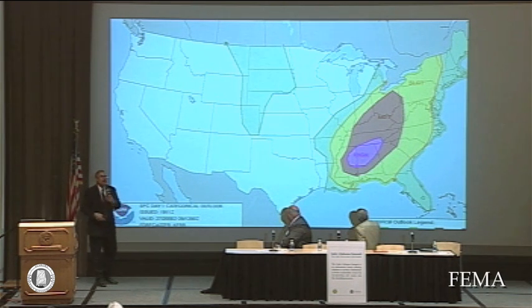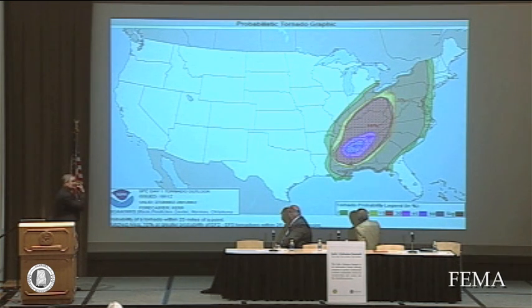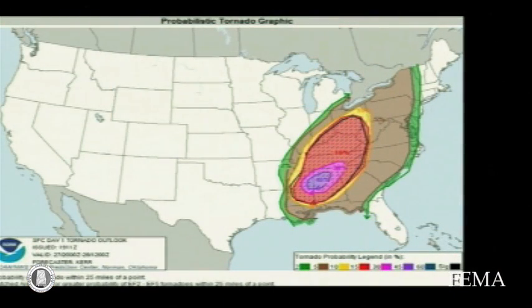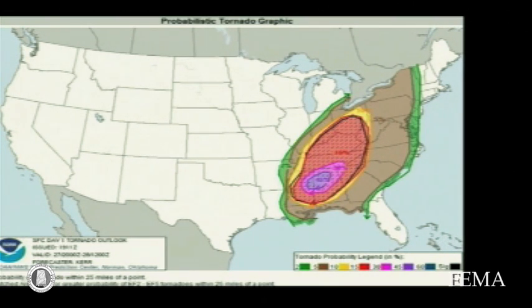That is the highest rating you can have for the potential for a severe weather outbreak. This is the one I gave a lot of briefings on that we posted on our websites — the expected chance of a tornado within any point within 25 miles. They were saying that within this area, you had a 45 percent chance of a tornado at any point within 25 miles. That's incredible values — typically it's a lot less than that.